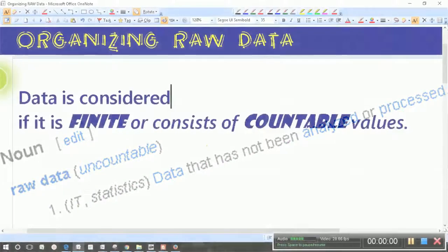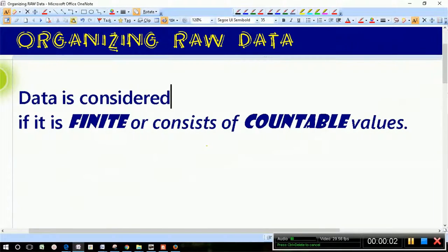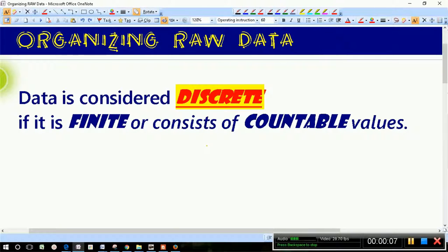Data is considered to be discrete if it is finite or it consists of countable values. What does this mean? It can only take on a limited amount of values.